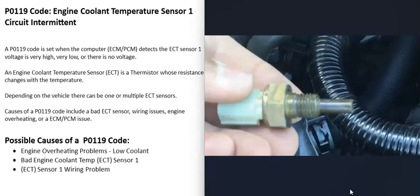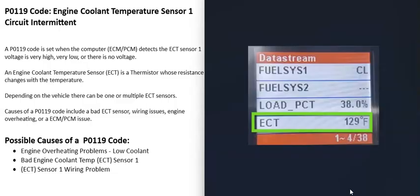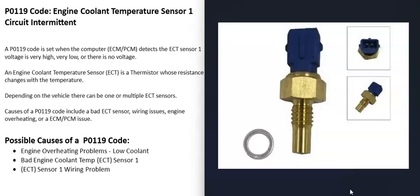Another possible cause is a bad ECT sensor number one — it may have simply gone bad and need to be replaced. There are a few ways to test these sensors. If you have an OBD2 scan tool, you can check the sensor readings. For example, if the engine is cold and it's 70 degrees outside but the sensor is reading 129 degrees Fahrenheit, there's clearly a problem with that sensor.